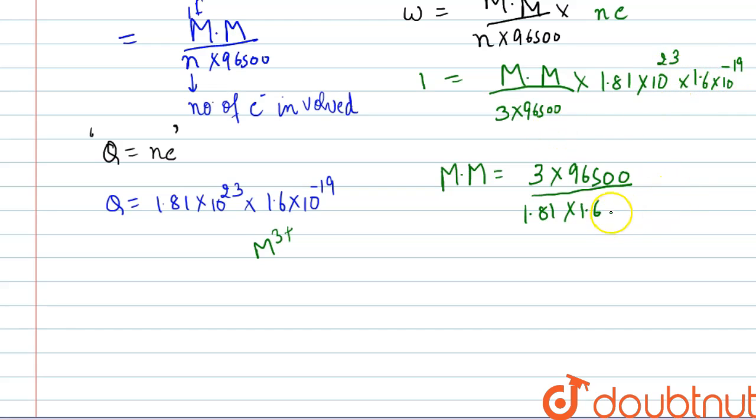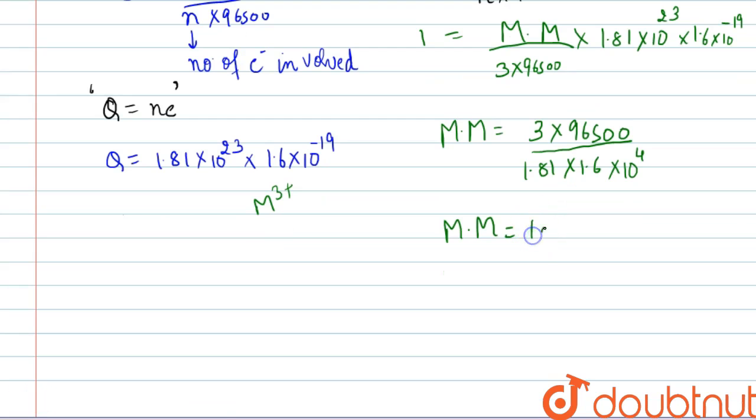In it will be 10⁴. Now we will solve from here the value of molar mass will be equal to 10 gram per mole. So this will be the atomic mass or we can say the molar mass of the element.